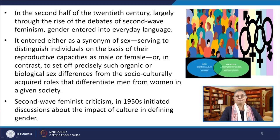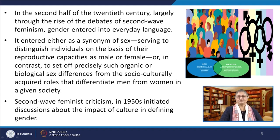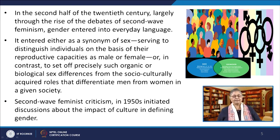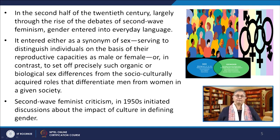The terms sex and gender mean different things to different feminist theories, and neither are easy or straightforward to characterize. Sketching out some feminist history of the terms provides a helpful starting point. In the second half of the 20th century, largely through the rise of second wave feminism debates, gender entered into everyday language — either as a synonym for sex distinguishing individuals on the basis of reproductive capacities, or in contrast to precisely such organic differences, to denote the socio-culturally acquired roles that differentiate men from women in any given society.